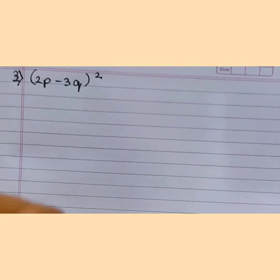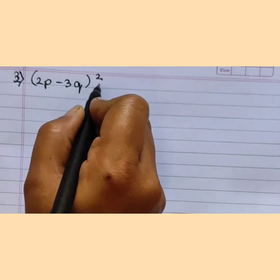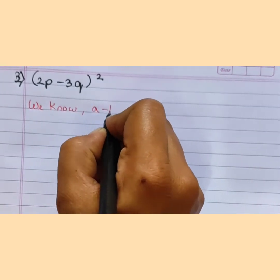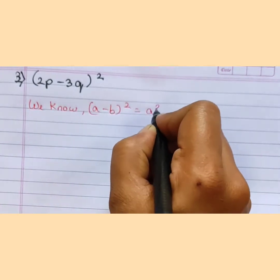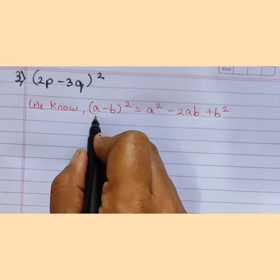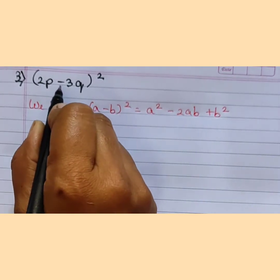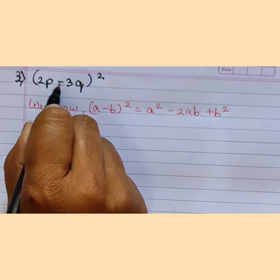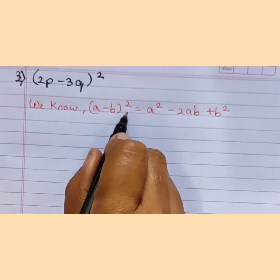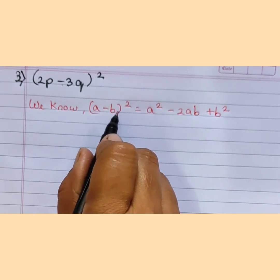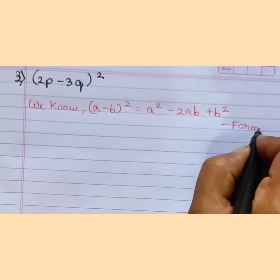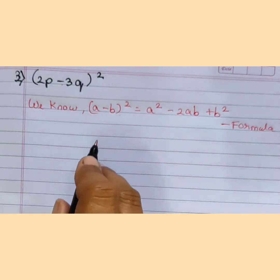Third sum: expand (2P minus 3Q) whole square. We use the formula A minus B the whole square equals A square minus 2AB plus B square, because there is a negative sign in the sum. Based on the sign we decide whether to use A minus B or A plus B whole square formula.